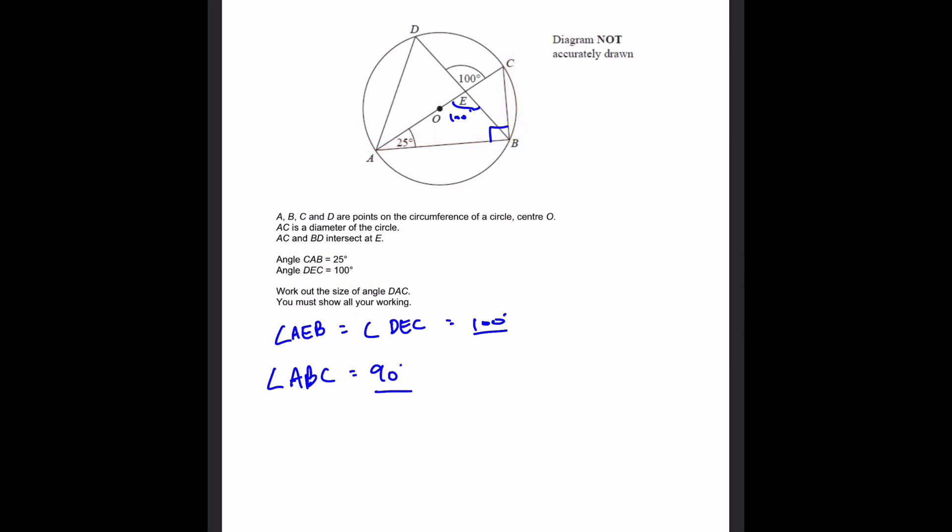Now, since you know this, we can also find angle ABE. We have a small triangle here and two of the angles are shown: 25 and 100 degrees. So angle ABE will be 180 minus 25 minus 100, which equals 55 degrees.